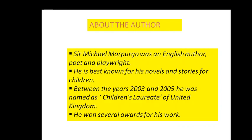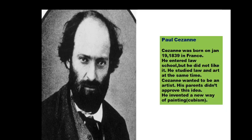Children, have you ever heard of Susan? Now I am going to show you the picture of Paul Susan. This is the picture of Susan's children. He was born on January 19, 1839 in France. He entered law school, but he did not like it. He studied law and art at the same time. Susan wanted to be an artist, but his parents did not approve his idea. He became an impressionist. He invented a new way of painting called cubism, but he was not confident of his work.